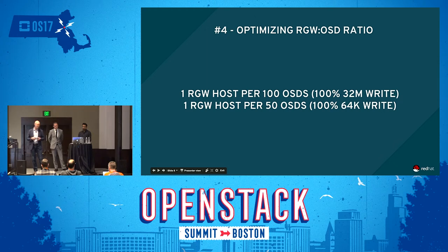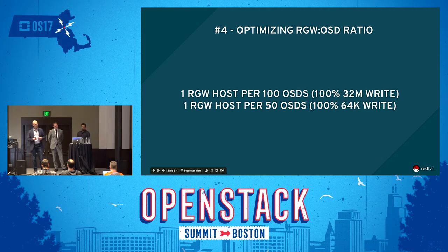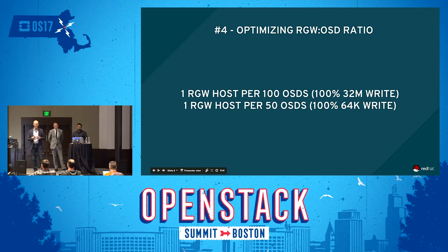Number four of four: optimizing the RGW to OSD ratio. We focused on writes because that's the most challenging IO pattern. For 100% writes focused on large objects, after one RGW host per 100 OSDs, adding more RGW hosts did not make a material improvement in performance. For smaller objects, one RGW host per 50 OSDs — adding more RGW hosts beyond that did not result in material improvement.